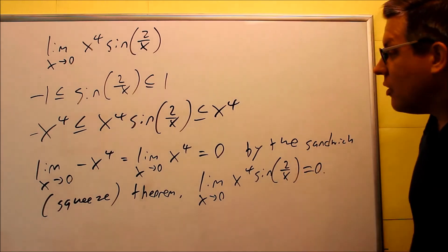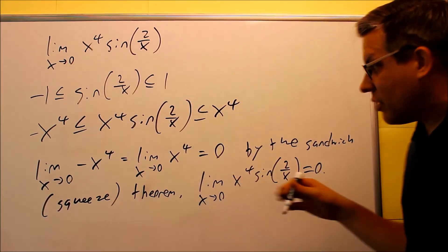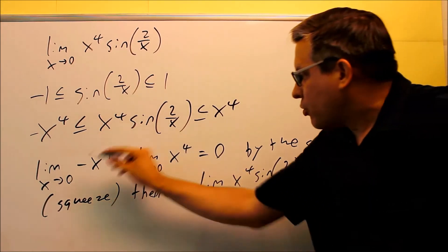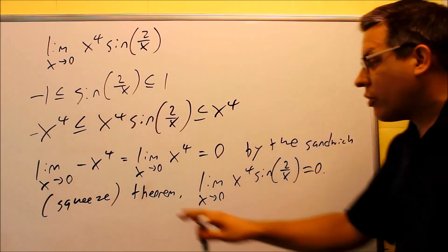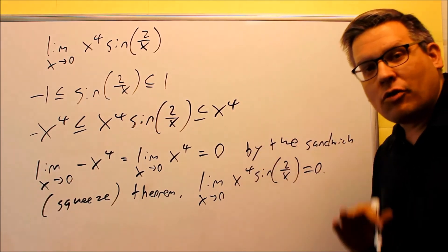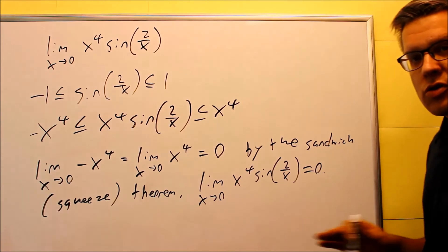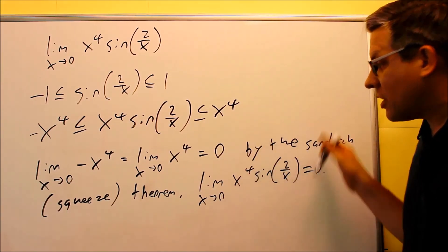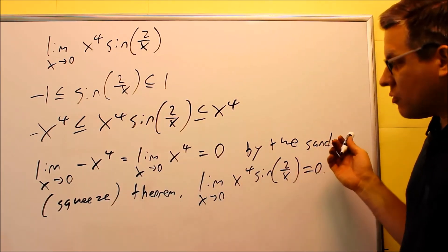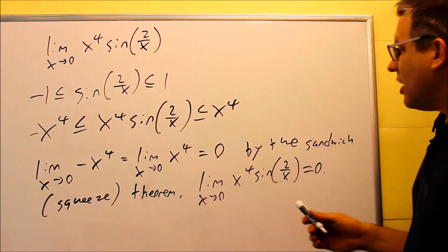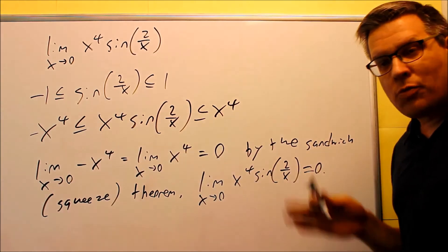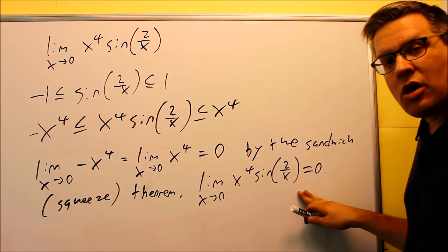Because both outer limits equal zero, by the sandwich or squeeze theorem — depending on what book you're using — the limit as x approaches zero of x to the fourth times sine of (2/x) is also going to equal zero. If you're doing it this way, you must include a statement in your answer that says 'by the sandwich or squeeze theorem.' You can't just write the setup and then the answer — you have to indicate which theorem you're using to support it. In calculus we need to show reasoning, so for problems involving a theorem you must state it. Both outer limits equal zero, and since the original is squeezed between them, the original must also go to zero.